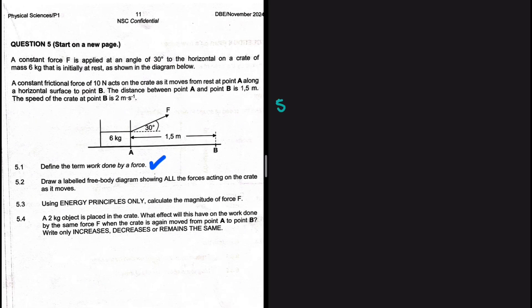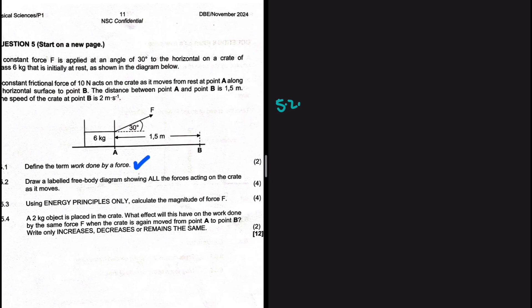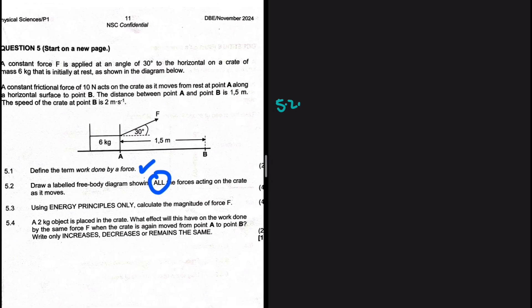Let's take a look at 5.2. Draw a free body diagram showing all the forces acting on the crate as it moves. At least in 5.2, we're supposed to draw a free body diagram showing all the forces. Because in question 2, we're supposed to draw a free body diagram showing only the horizontal forces, not vertical forces. You include the vertical forces and you probably lose marks. So let's read the question.